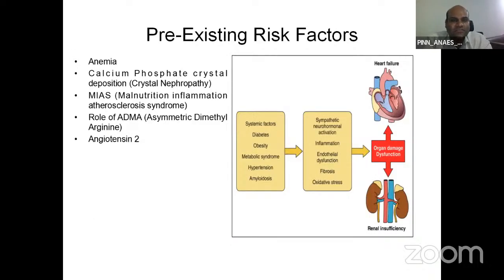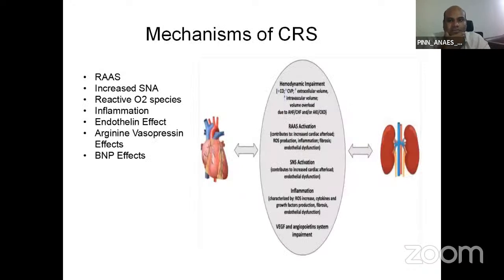Pre-existing risk factors of cardiorenal syndrome include anemia, calcium-phosphate crystal deposition (crystal nephropathy), malnutrition, inflammation, atherosclerosis syndrome, role of asymmetric dimethylarginine, and angiotensin 2 receptors. The mechanism of cardiorenal syndrome involves over-activation of the RAAS system, over-activation of the sympathetic nervous system, inflammation, effect of vascular endothelial growth factors, vasopressin effects, and hemodynamic impairment.